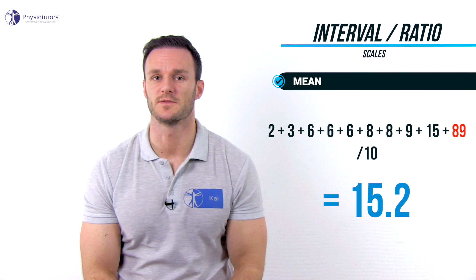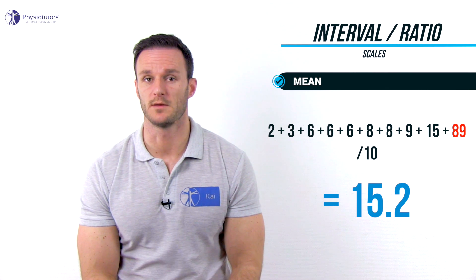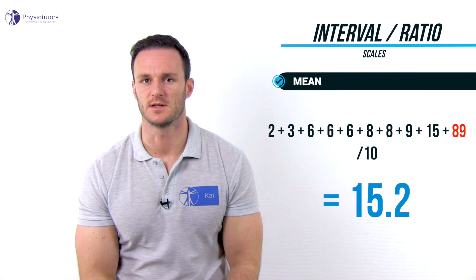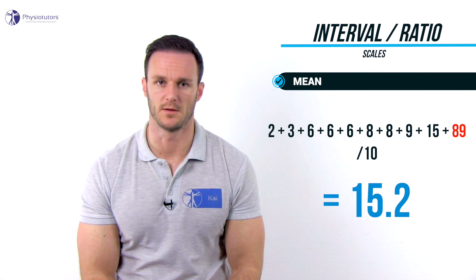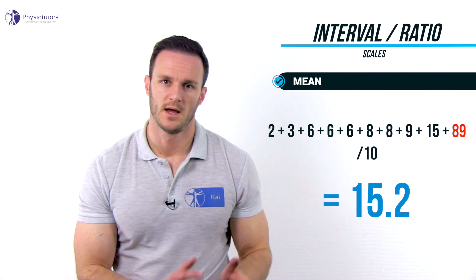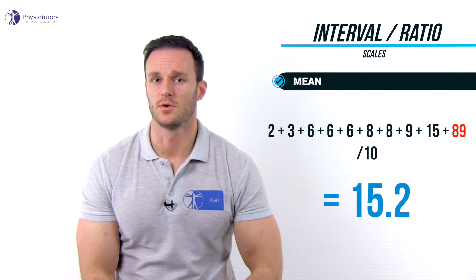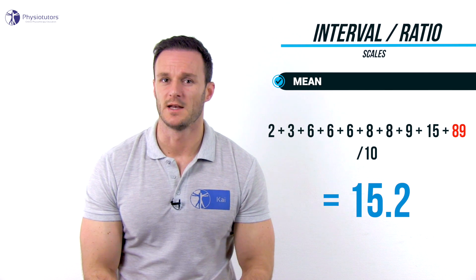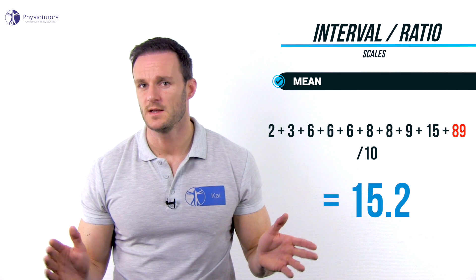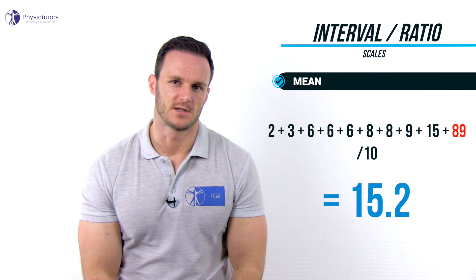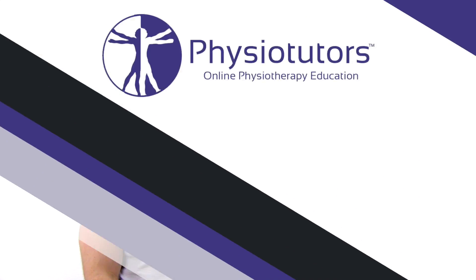A measure for the variance of the scores around the mean is the standard deviation, which is often reported together with the mean. The more the scores differ from each other and from the mean, the bigger the standard deviation and the bigger the variance. It is assumed that many continuous variables measured in a random sample will follow a normal distribution.